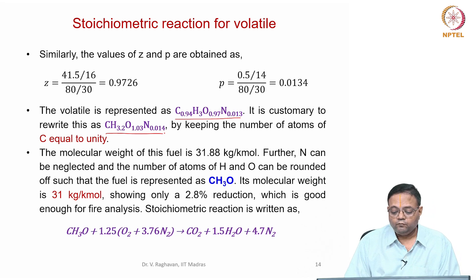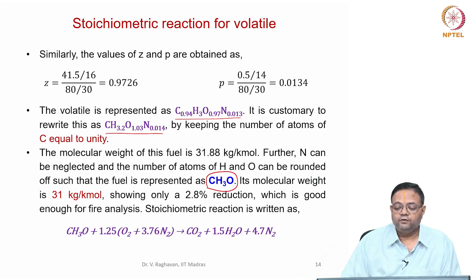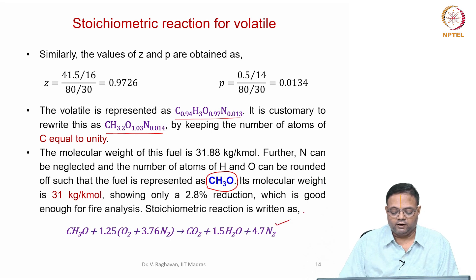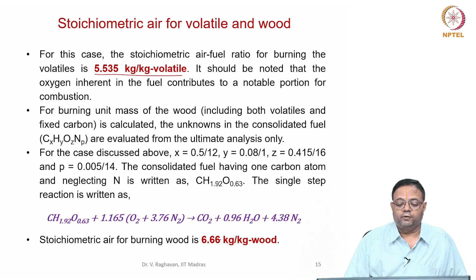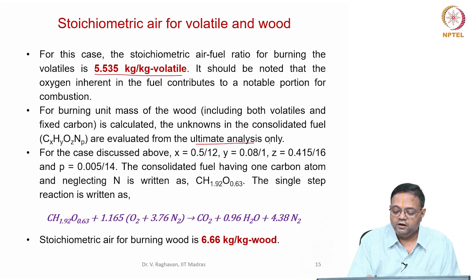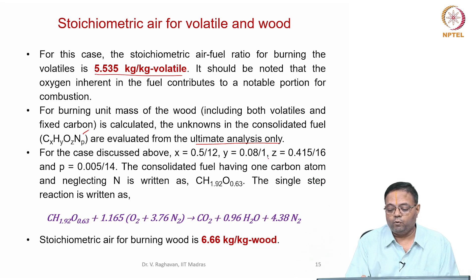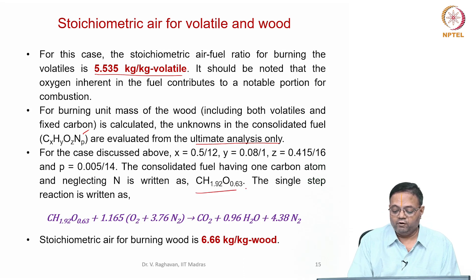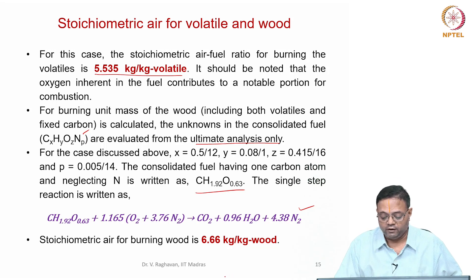For this equivalent volatile fuel CH3O, we write the stoichiometric equation and get a theoretical air requirement of 5.535 kg of air per kg of volatile. For burning the entire wood, we use only the ultimate analysis: x = 0.5/12, y = 0.08/1, z = 0.415/16, N = 0.005/14, giving an equivalent fuel. Writing the stoichiometric equation yields 6.66 kg of air required per kg of wood — noting this value changes if the proximate and ultimate analysis values change.